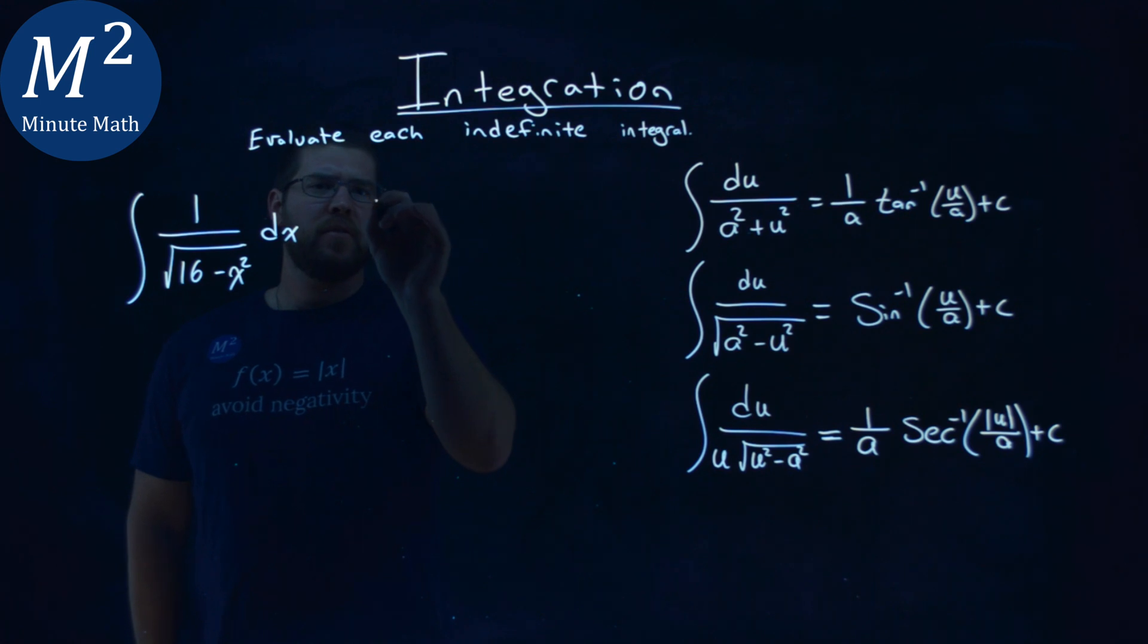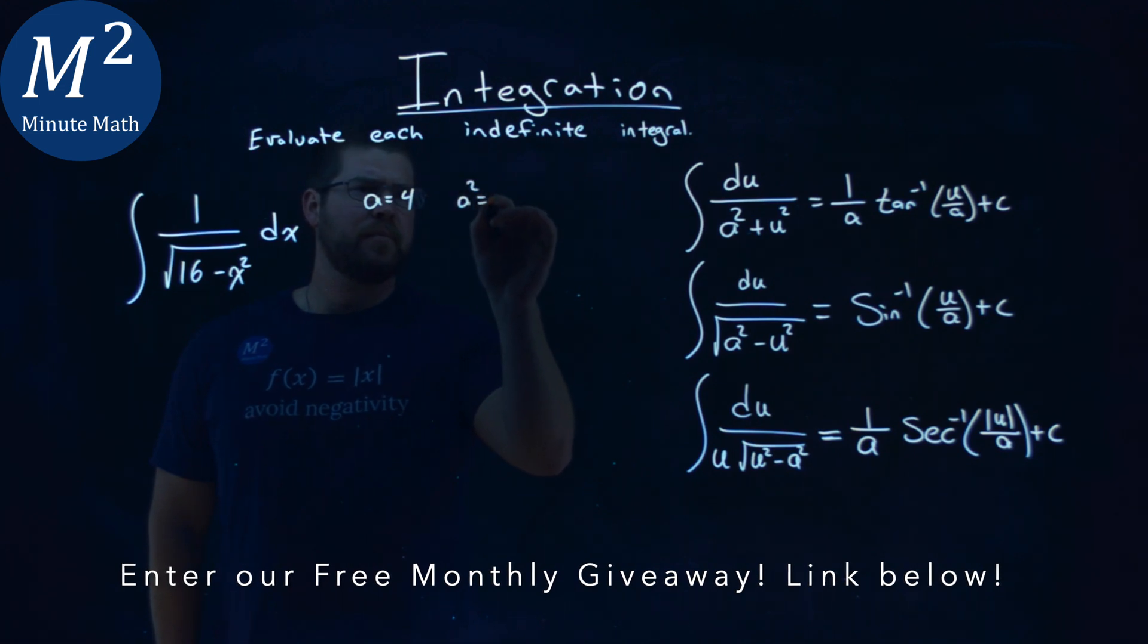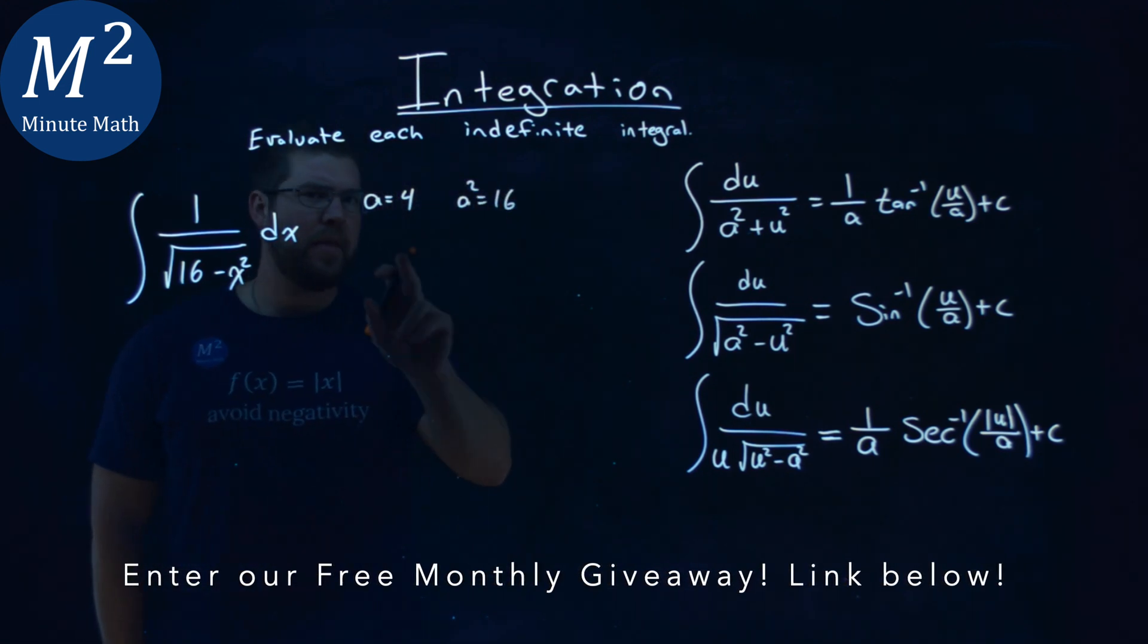Well, for the a value, if we said a is equal to 4, then we can see that a squared equals 16. We got that there, right?